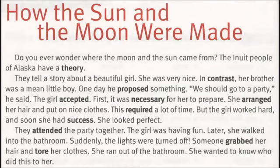How the sun and the moon were made. Do you ever wonder where the moon and the sun came from? The Inuit people of Alaska have a theory. They tell a story about a beautiful girl. She was very nice. In contrast, her brother was a mean little boy. One day he proposed something: we should go to a party, he said. The girl accepted.